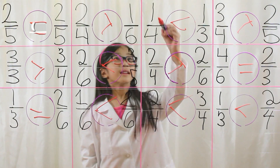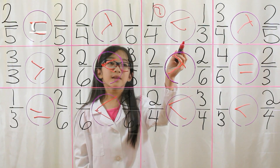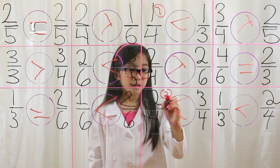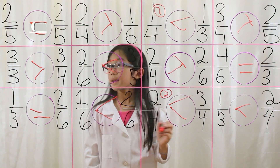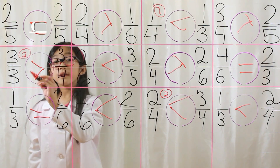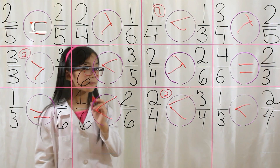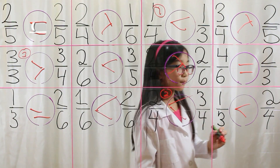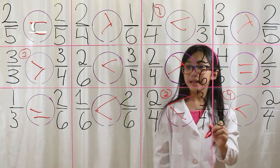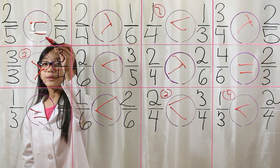Type number one: the numerators are the same. Type two: the denominators are the same. Type three: one of the fractions is equal to one. Type four: you cross multiply. Type five: they are equal.